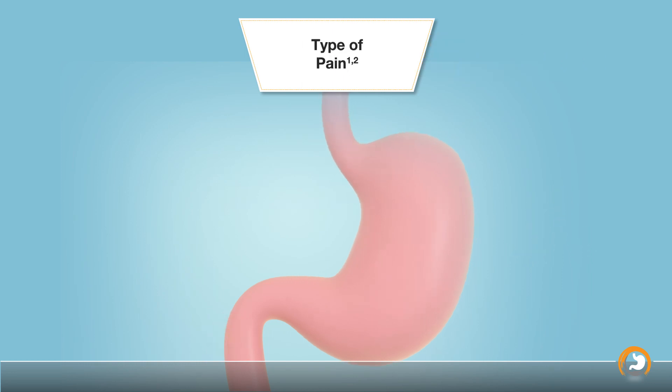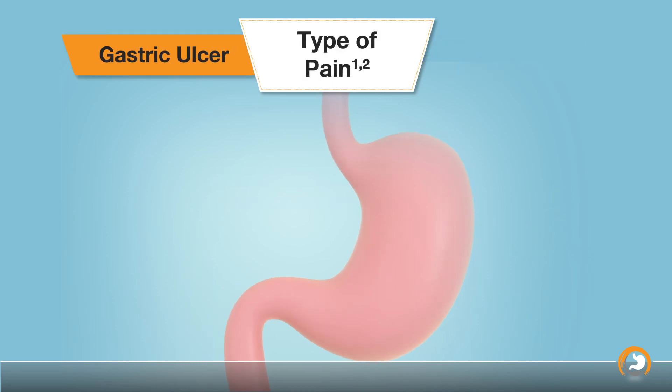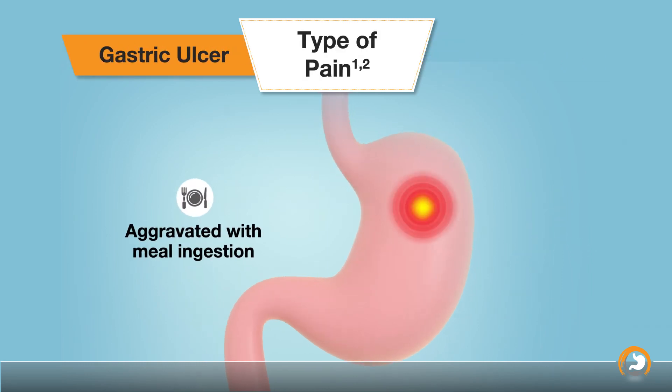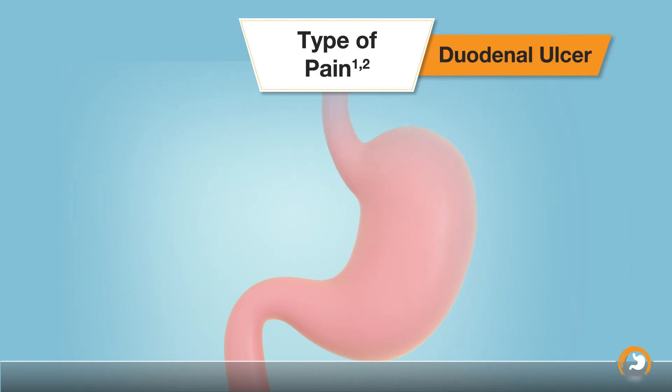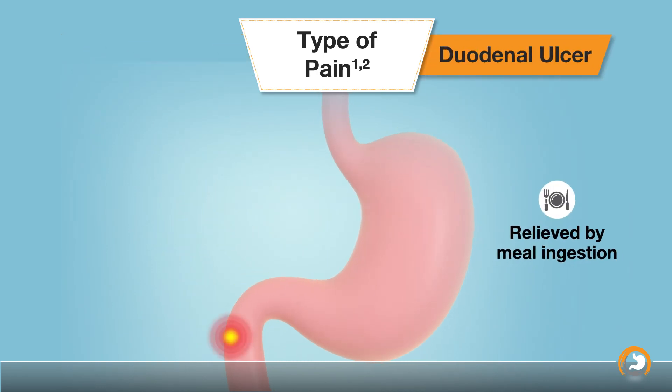The pain of gastric ulcers is usually aggravated with meal ingestion, whereas in duodenal ulcers, ulcer pain is relieved by meal ingestion.